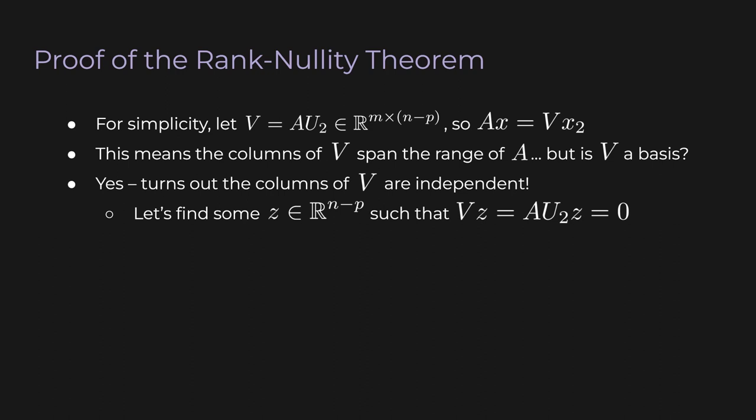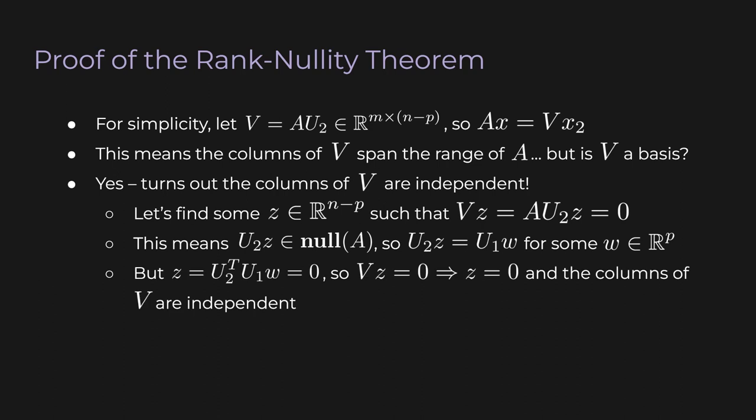In other words, AU2Z equals zero. So this in turn means that U2Z is in the null space of A. In other words, U2Z equals U1W for some W value in RP. Again, remember that the columns of U1 form an orthonormal basis for the null space of A. Since U2Z is in the null space of A, we are guaranteed to be able to express it as a linear combination of the columns of U1. But since the columns of U2 are orthonormal, we can pre-multiply both sides by the transpose of U2. U2 transpose U2 is just the identity matrix, so the left hand side just becomes Z. And on the right hand side, we get U2 transpose U1. But remember that all those columns are orthonormal, so their dot products are all zero. So U2 transpose U1 is just a matrix full of zeros, so Z must be the zero vector.